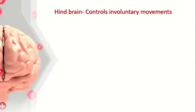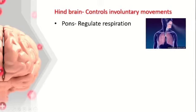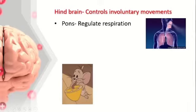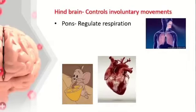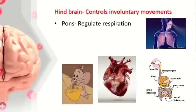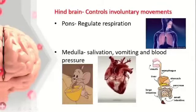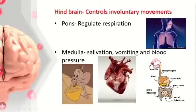The hindbrain controls all involuntary movements like respiration — the breathing process — which is controlled by the pons, present in the hindbrain. Involuntary actions like salivation, vomiting, digestion, and blood pressure are all not under our control and are controlled by the medulla, which is also present in the hindbrain.